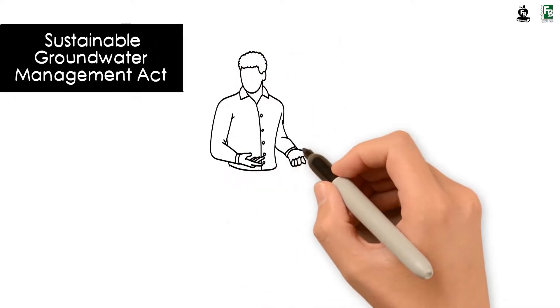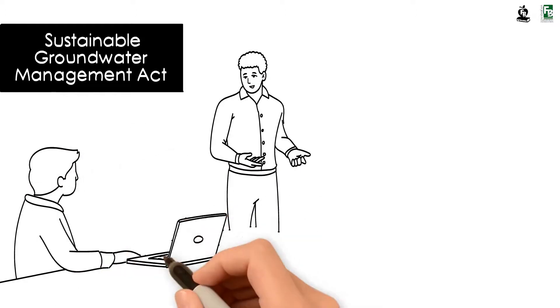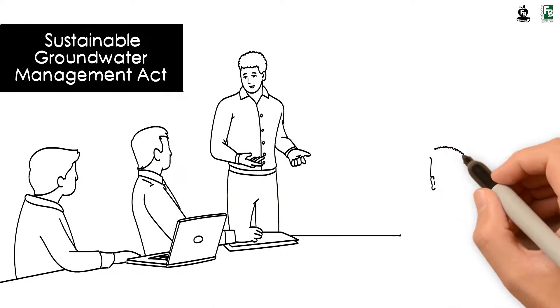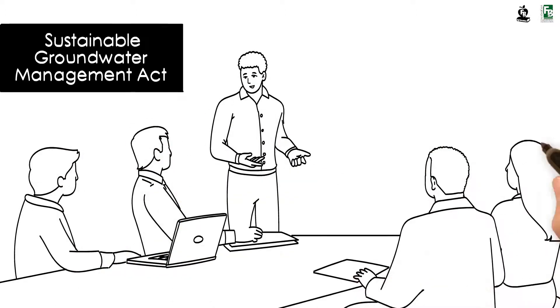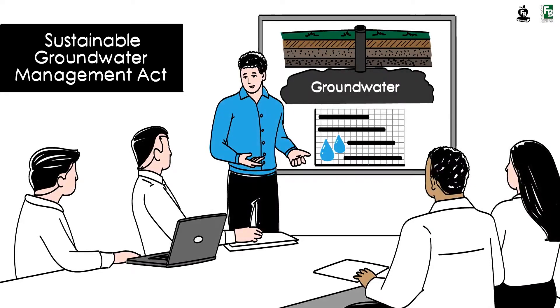California passed the Sustainable Groundwater Management Act, or SGMA, in 2014. SGMA requires our region to develop and implement detailed plans for how it will reach long-term groundwater sustainability.